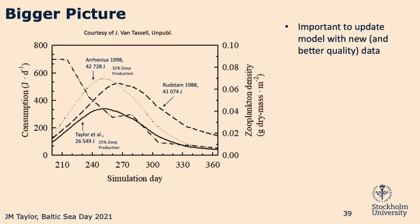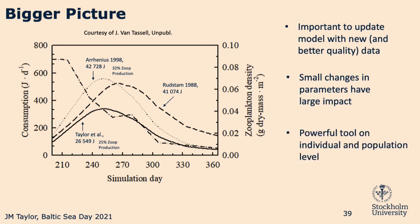The moral of the story is that it's important to update these models with new and higher quality data. The better the quality of data you feed in, the better you parameterize these models, the better they perform, and the better they reflect what's actually happening in the ecosystem. Small changes have a large impact, and all in all, these bioenergetics models are a very powerful tool — both on the individual level to investigate questions about individual herring, and on the population level for herring all across the Baltic Sea.